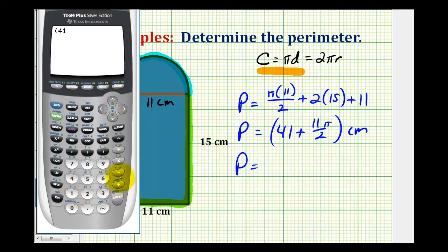So we have 41 plus 11 pi over two, or divided by two. So if we press enter, so if we round this to the nearest hundredth, the perimeter would be approximately 58.28 centimeters.